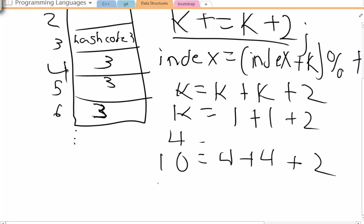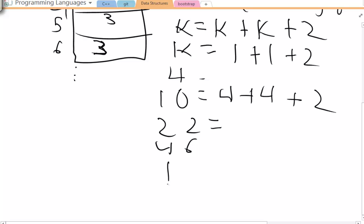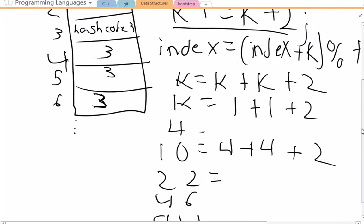k is now equal to 10 because it's 4 plus 4 plus 2. And then the next operation, if you can guess it right, is 22 because it's 10 plus 10 plus 2. And then we've got 46. And then we've got 94, according to my calculations. As you can see, this will go on and on. And we don't have to worry about going over because of the modulus operation.